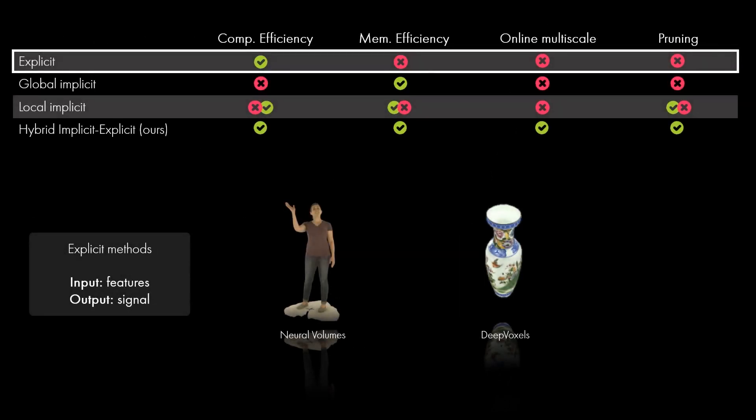Let's overview various network architectures that have been proposed to represent scenes or signals. Explicit network architectures generally take as input voxel grids or features and output the signal of interest, such as in deep voxels or neural volumes. These methods are typically computationally efficient because features can be explicitly stored and efficiently decoded, but for large scales they become memory inefficient as the number of stored features grows.